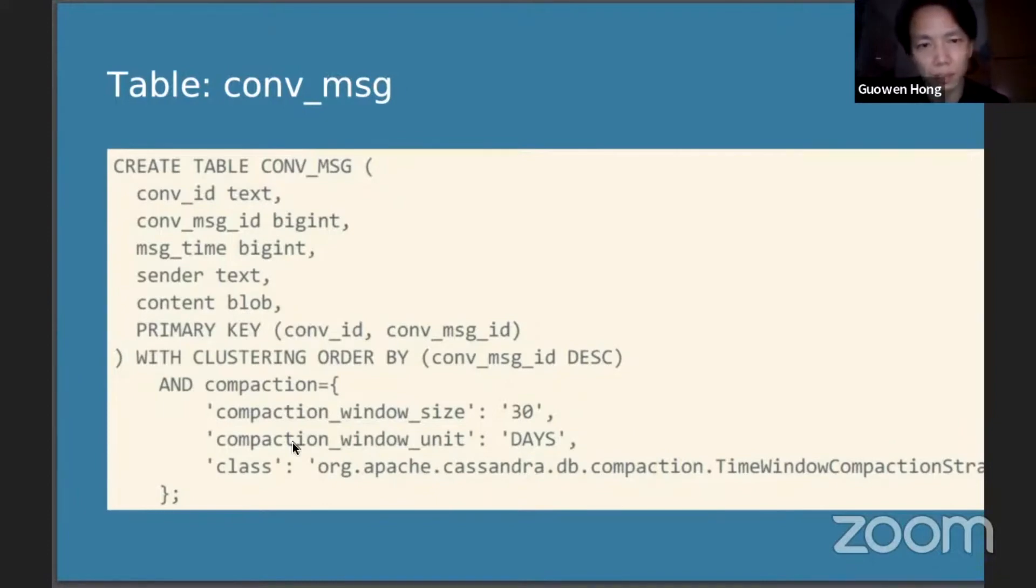Now I'll talk about how we use Cassandra. First, we designed a table to store conversational messages, and we use conversation ID as the partition key and the conversation message ID as the clustering key.